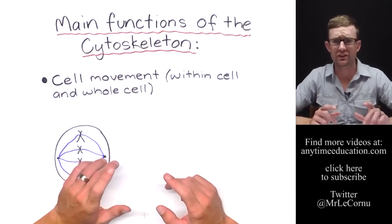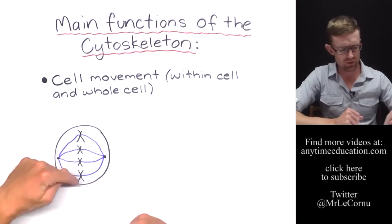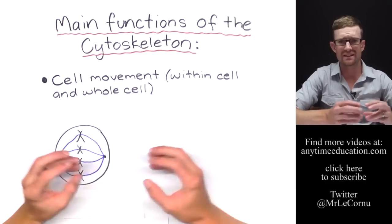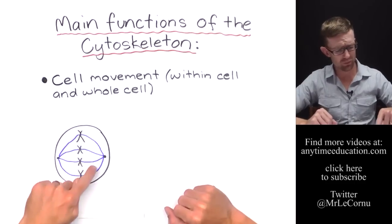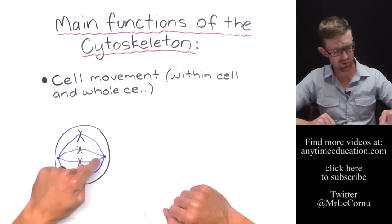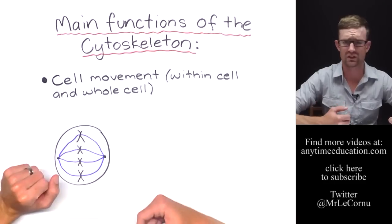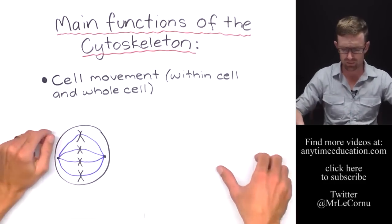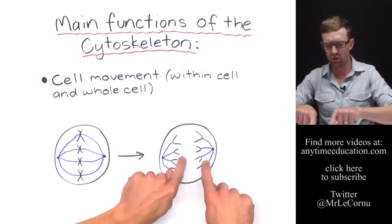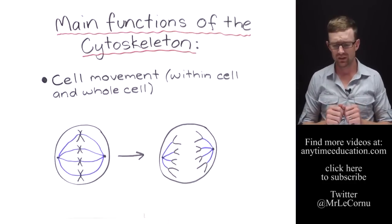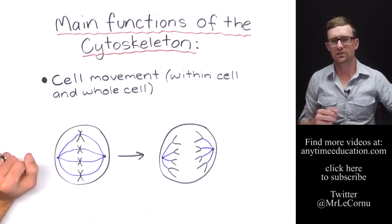Another example of where the cytoskeleton assists in movement inside of the cell is in cell division when the chromosomes are being organized and separated as part of a process called mitosis. The chromosomes are held in place by what we call the spindle fibres or spindle apparatus that you can see here in blue. They are made of the same material that the cytoskeleton is made of. They hold the chromosomes in place and then pull those chromosomes apart so that a sister chromatid from each goes in each different direction. And that is an example of movement within the cell that is carried out by the cytoskeleton.